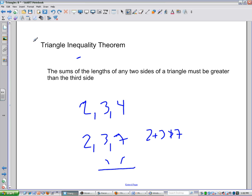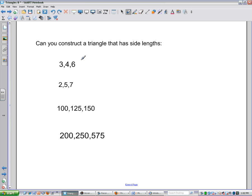So triangle inequality theorem. The sum of the lengths of two sides of a triangle must be greater than the third side. Can you construct a triangle that has side lengths three, four, and six, two, five, and seven? You can work your way through those, right? Pause for a second, and then when you think you're ready, tell me.